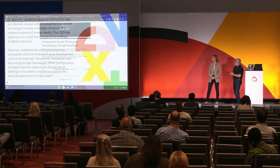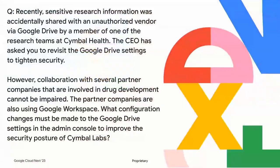We have one more sample question. The first part is a scenario: 'Recently, sensitive research information was accidentally shared with an unauthorized vendor via Google Drive by a member of one of your research teams at Symbol Health. The CEO has asked you to revisit the Google Drive settings to tighten security. However, collaboration with several partner companies involved in drug development cannot be impaired. The partner companies are also using Google Workspace. What configuration changes must be made to Google Drive settings in the admin console to improve the security posture?'